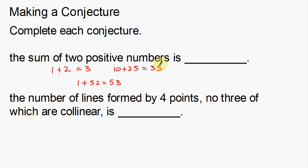Interestingly enough, 53 and 35 are kind of transposed numbers. But I can't really say you're always going to get an odd number, because I can come up with the example 2 plus 4 equals 6. That's an even number, so I can't say that adding two positive numbers always gives an odd number.